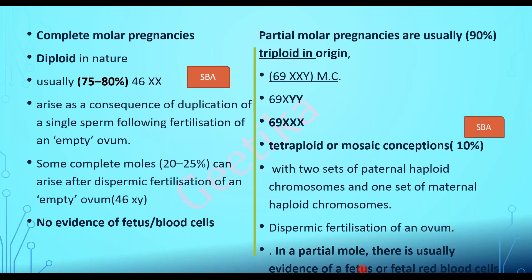Partial mole will have evidence of fetal or fetal red blood cells. That's why we give anti-D injection when treating a partial mole. However, the latest guideline says we should give anti-D injection in all molar pregnancies because histological diagnosis is not evident until five to six days — it is the gold standard. So we cannot wait, and it is now routine to give anti-D injection within 72 hours in all cases of molar pregnancy.